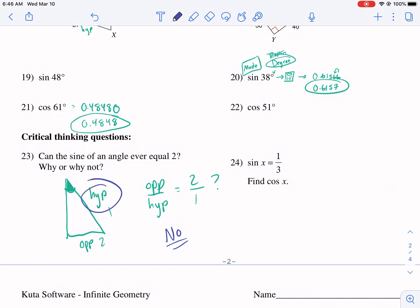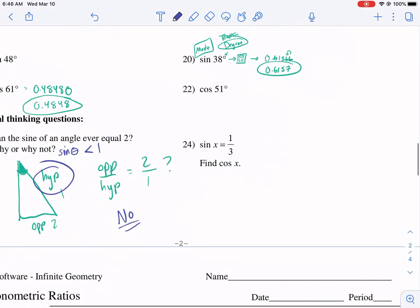The hypotenuse has to be the biggest side. So this ratio, opposite over hypotenuse, must be less than 1. So the sine of an angle has to be less than 1 because the hypotenuse has to be the longest side. Otherwise, it's not a triangle.